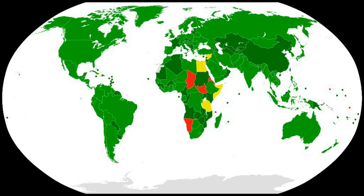As stated in Article 1 of the BWC, each state party to this Convention undertakes never in any circumstances to develop, produce, stockpile or otherwise acquire or retain: 1. microbial or other biological agents, or toxins whatever their origin or method of production, of types and in quantities that have no justification for prophylactic, protective or other peaceful purposes; 2. weapons, equipment or means of delivery designed to use such agents or toxins for hostile purposes or in armed conflict.